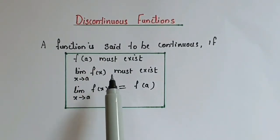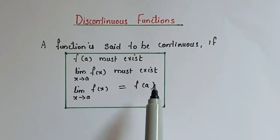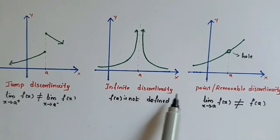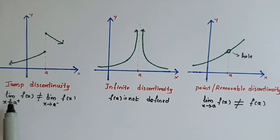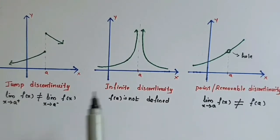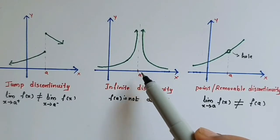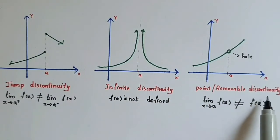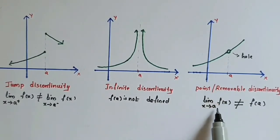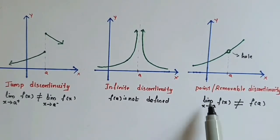Discontinuous functions. A function is said to be continuous if it satisfies all three conditions. If any condition fails, the function is discontinuous. Based on which condition fails, there are different types of discontinuity. First is jump discontinuity — the limits of the function exist but are not equal to each other, producing a big gap or jump in the graph. Second is infinite discontinuity — the function goes to infinity at x equal to a. Third is point or removable discontinuity — the function does not exist at a point, so the limit is not equal to the value of the function, leaving a hole in the graph.